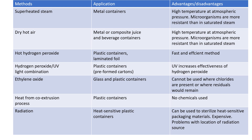When we talk about different sorts of packaging material — for example, metal containers — the preferred sterilization method is superheated steam, which can kill microorganisms. Superheated steam is exposed at very high temperature for a specified period of time. For metal and other composite juice or beverage containers, dry hot air is also one sterilization method. For plastic containers and laminated foils, the method selected is hot hydrogen peroxide. Hydrogen peroxide along with UV light combination is the best method suggested for sterilization of plastic containers, because ultraviolet rays increase the effectiveness of the hydrogen peroxide.